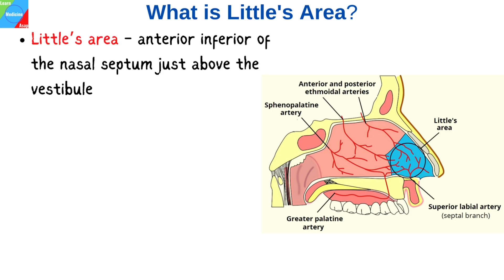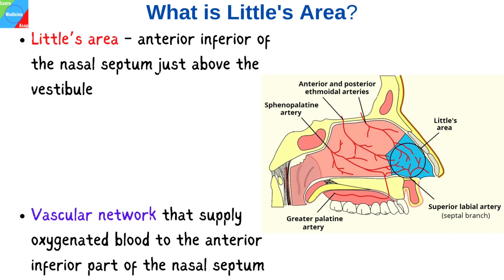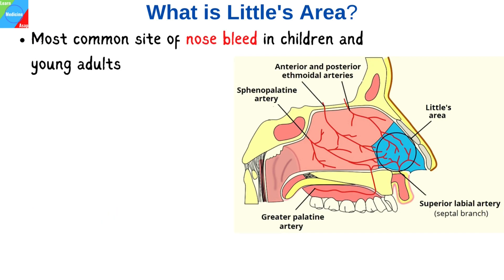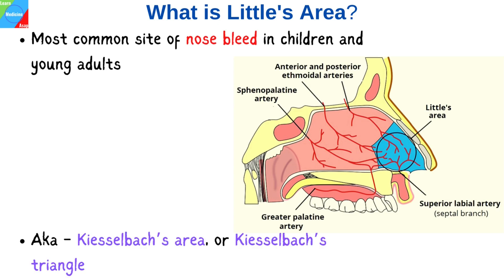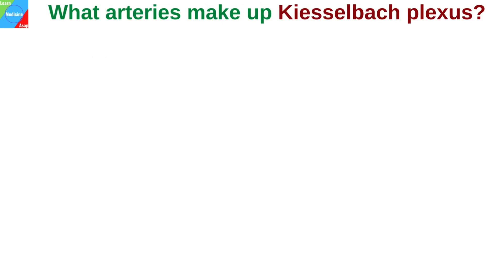Little's area is found on the anterior inferior of the nasal septum, just above the vestibule. It is a vascular network that supplies oxygenated blood to the anterior inferior part of the nasal septum. This vascular area is the most common site of nosebleed in children and young adults. This area is also commonly known as the Kieselbach's area or the Kieselbach's triangle.